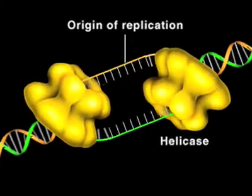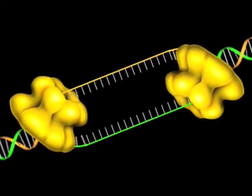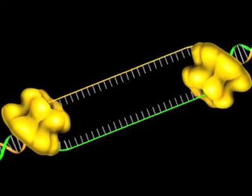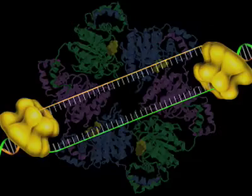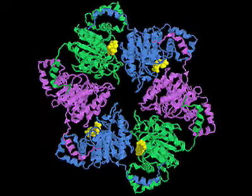Helicases separate nucleic acid duplexes into their component strands using energy from ATP hydrolysis. The crystal structure of this DNA helicase from bacteriophage T7 reveals a hexagonal arrangement of six identical subunits.